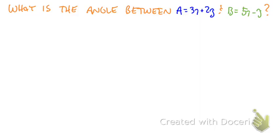Here's an example where we want to know the angle between two different two-dimensional vectors. And the way that we're going to do this is we're going to use the definition of the dot product.